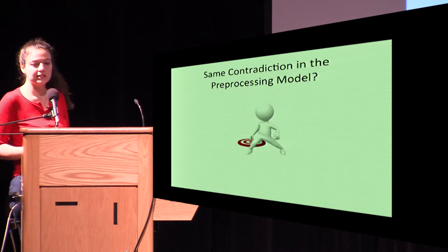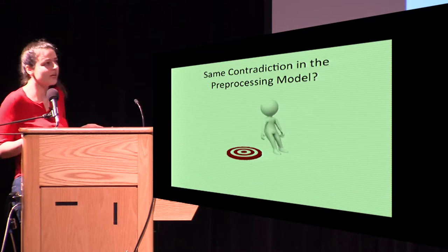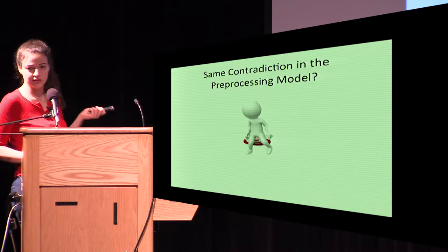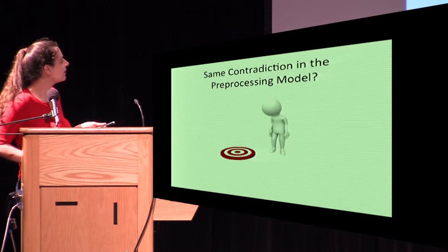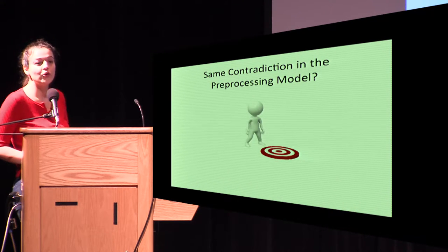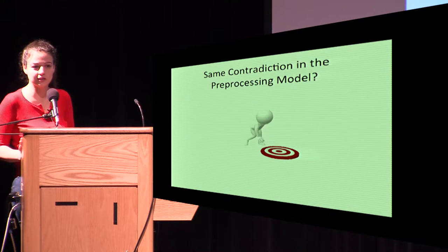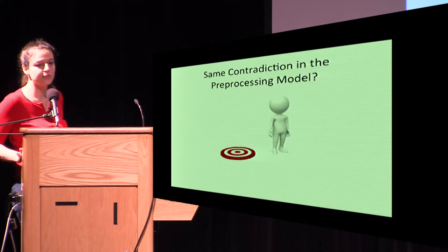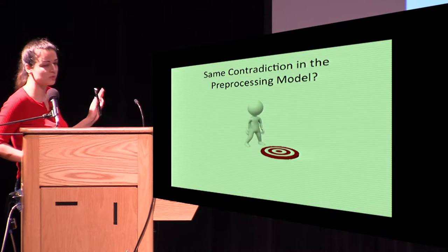Can we reach the same contradiction for the pre-processing model? The answer is no, because we know how to do two-party computation when we have pre-processed data in the honest majority setting. So this argument completely breaks down in the pre-processing phase, and we must find another way to reach a contradiction.